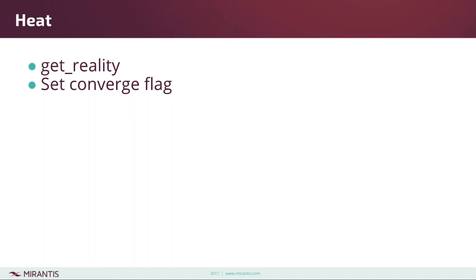There's another feature called the convergence flag, which is about getting the reality of your environment. You can use the converge flag to update the API request, and the update actions will pull the resource from the services like a Nova server or Cinder volume and update against the reality. For example, when trying to update a Nova instance from flavor one to flavor two, Heat can find out that the instance is already using flavor two, so it won't do an unnecessary flavor update.